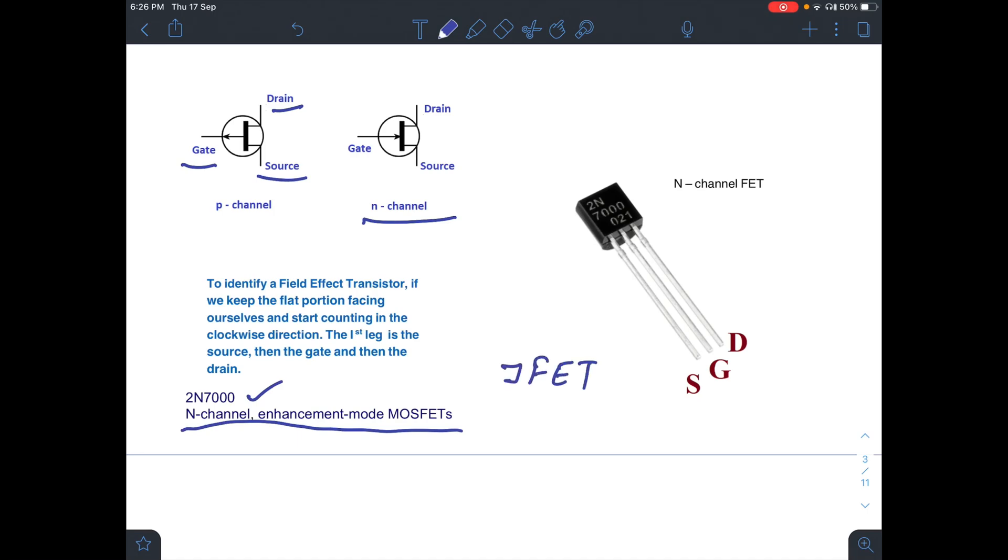From the diagram, you can see there is a flat surface whereas there is a curved surface. How to identify the three pins of a FET? If you place the flat surface of the FET facing towards yourself and count clockwise, then the first pin will be source, second pin will be gate, and third pin will be drain.